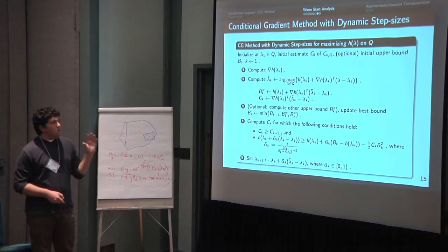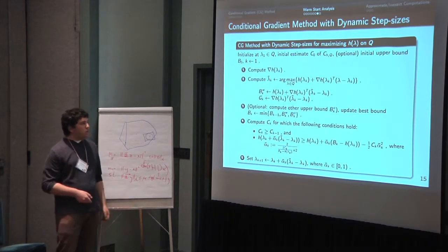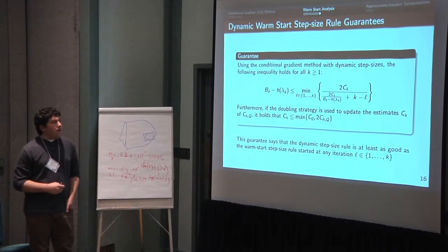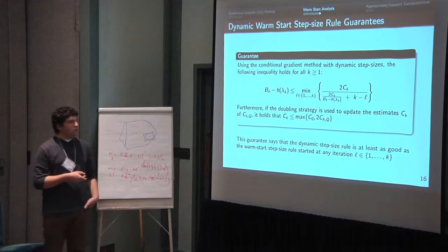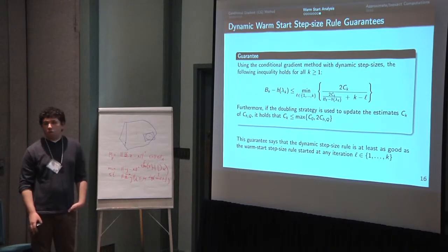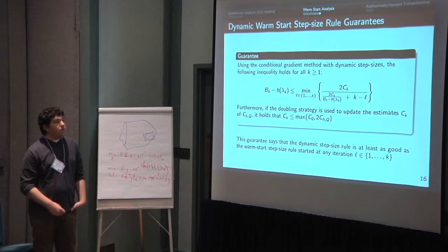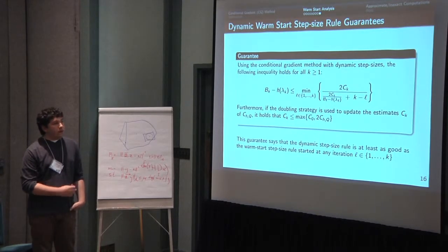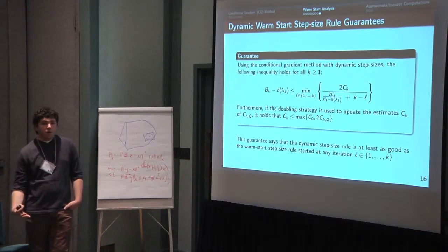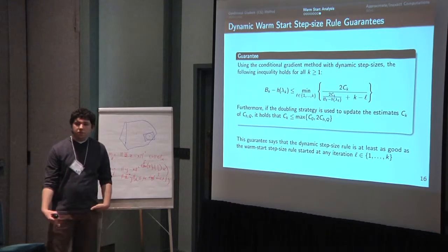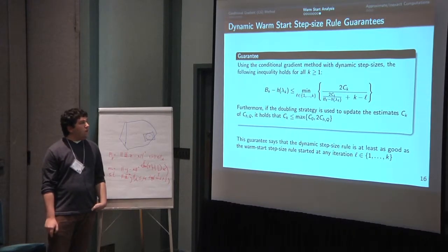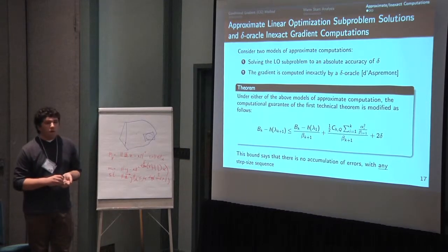So this is just a complete description of everything I just described, the method with the dynamic step sizes. And this is the guarantee that we get. So the guarantee looks like we've got this kind of expression that's looking at, basically, if you look inside this min here, you get something that looks like the result for the warm start, which says 2 over the curvature estimate divided by the ratio plus k minus l. But what is that saying? We're taking the min over all these warm starts. So it's like you did a warm start starting at iteration l, but it's the min over all previous iterations. So it's like you got the best possible warm start. And it's kind of natural that we would get something like this here. And so that concludes this part of the talk about the warm start analysis.